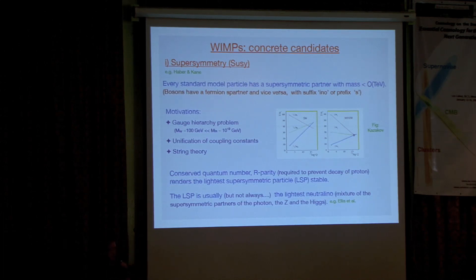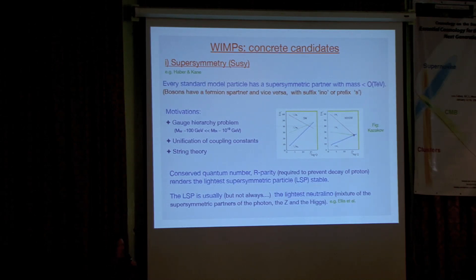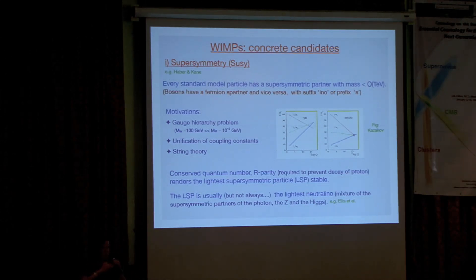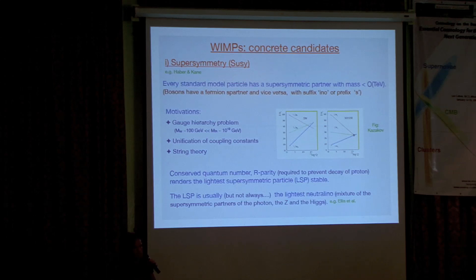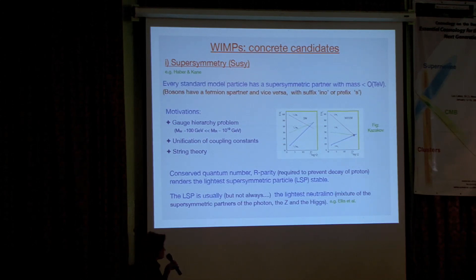Additionally, there's usually a conserved quantum number known as R-parity, which is required to prevent the proton decaying on a timescale shorter than the age of the universe. A consequence of R-parity is that supersymmetric particles can only be created and decay in pairs, meaning the lightest of them is stable — it has nowhere to decay to. Typically, but not always, the lightest supersymmetric particle is something called the lightest neutralino, which is a mixture of the supersymmetric partners of the photon, the Z, and the Higgs. It turns out to have just the properties we need for dark matter: it's stable and it's neutral. That's supersymmetry providing us with a concrete dark matter candidate.